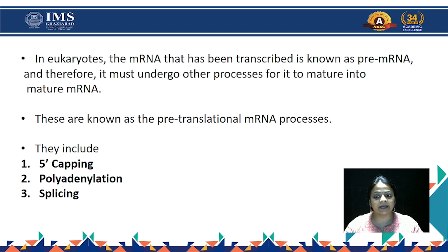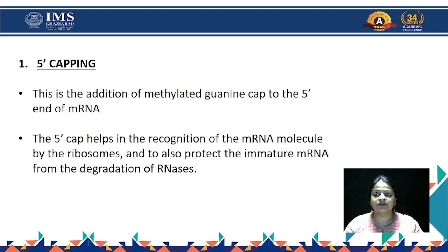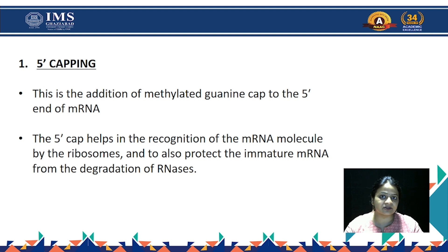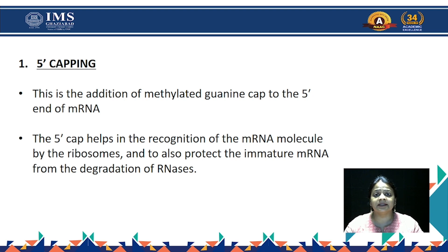The processes include 5' capping, polyadenylation, and splicing. The first stage — 5' capping — is the addition of a methylated guanine cap to the 5' end of the messenger RNA. The 5' cap helps in recognition of the messenger RNA molecule by the ribosome and also protects the immature messenger RNA from degradation by RNases. We add the 7-methylguanosine cap, which makes it more stable and also helps in attachment of the ribosome during translation.